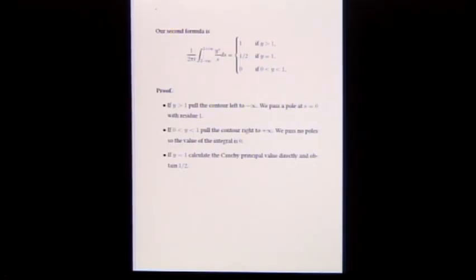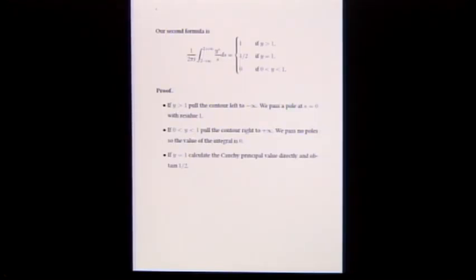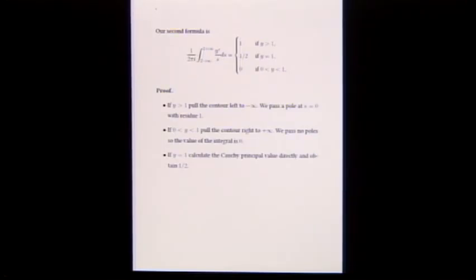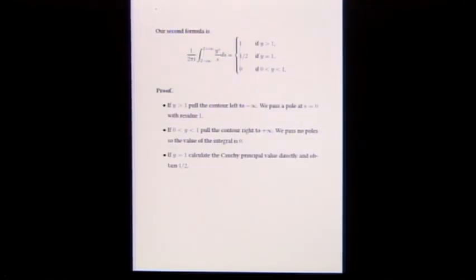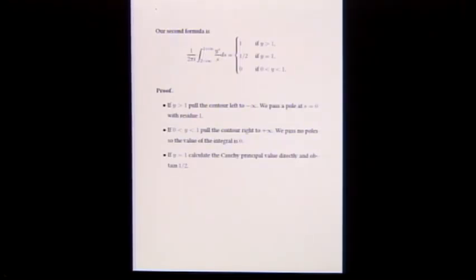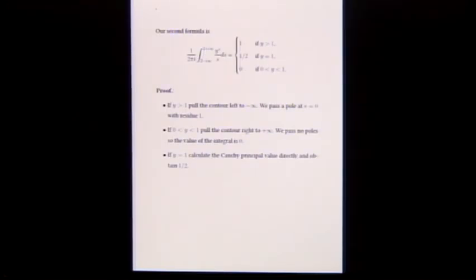If y is between 0 and 1, you pull the contour to the right, because y to the sigma goes to zero quickly as sigma goes to plus infinity. There are no poles to the right, so you get zero. When y equals 1, you calculate this directly — it's not absolutely convergent and we mean a Cauchy principal value — and you get 1/2.